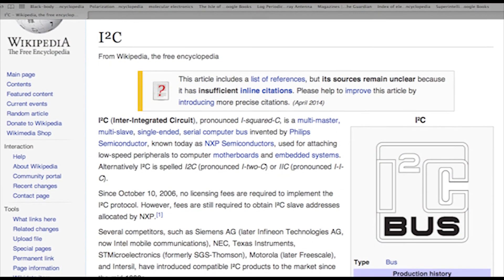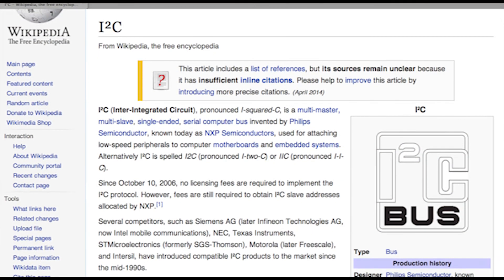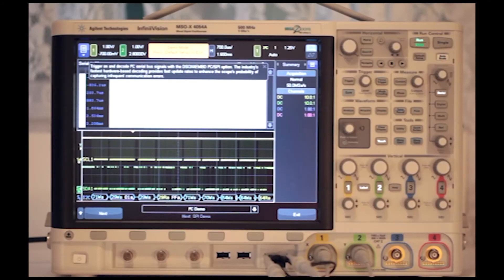Type I2C into a search engine and you will have lots of information. Originally developed by Philips Semiconductors, I2C has been an open source since 2006 and there are no licensing fees. At present, a number of companies market substantially similar implementations.